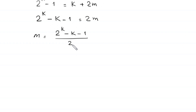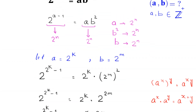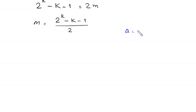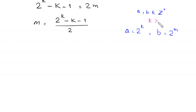Now recall that a and b are positive integers. We have supposed that a is equal to 2 to the power k and b is equal to 2 to the power m, and both a and b are positive integers. Since a is a positive integer, k must be greater than or equal to 0. Since b is a positive integer, m must be greater than or equal to 0.